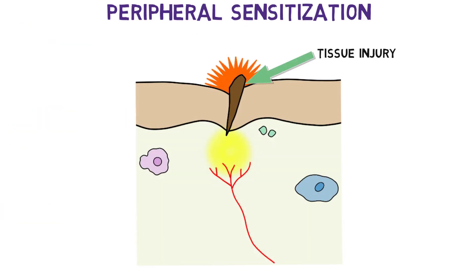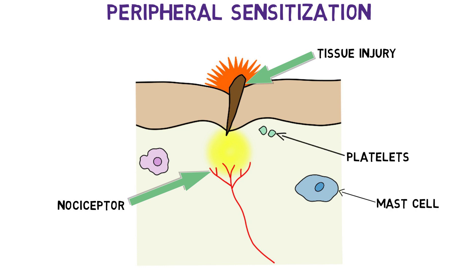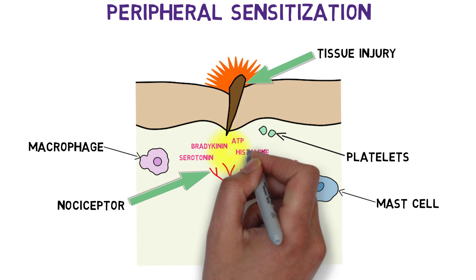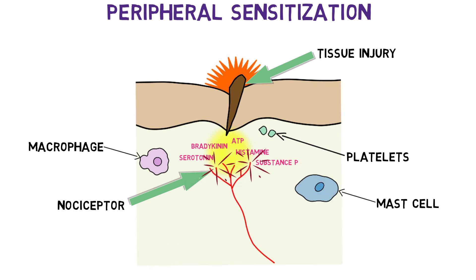Peripheral sensitization begins when nociceptors are exposed to chemicals released from cells at the site of an injury. These chemicals come from both neurons and non-neuronal cells such as mast cells, platelets, and macrophages. The chemical mixture includes substances like substance P, bradykinin, histamine, serotonin, ATP, and others. Most of these substances act on nociceptor ion channels and receptors, making them more responsive. While this chemical signaling is believed to protect the injured area, promote healing, and guard against infection, the chemical mixture also increases pain signals coming from the injury.